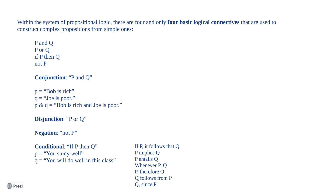Within the system of propositional logic, there are four and only four basic logical connectives used to construct complex propositions from simpler ones. First, conjunction, or conjoining — 'and.' For example, P and Q: 'Bob is rich' (P), 'Joe is poor' (Q). Both are true, so we can conjoin them: it is true that Bob is rich and Joe is poor. The second connective is the disjunction — 'or.' P or Q: 'Bob is rich or Joe is poor' — here we have reason to believe one or the other is true, but we cannot conclude the conjunction.